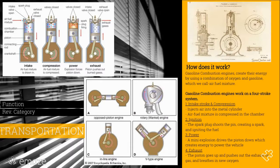Gasoline combustion engines work on a four-stroke system. The first stroke is intake and compression — when the engine injects air into the metal cylinder, and the air-fuel mixture is then compressed into the chamber. Two, ignition: the spark plug shoots the pin, creating a spark and igniting the fuel. Three, power: the ignited fuel makes a mini-explosion and drives the piston down, which creates energy to power the vehicle.